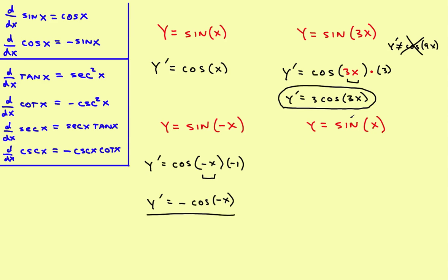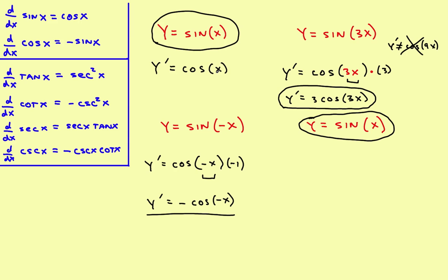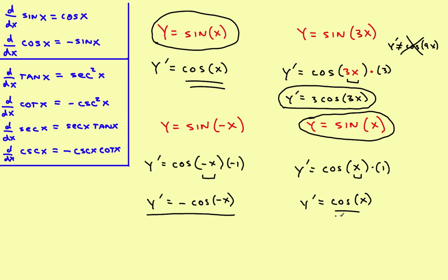Some students get confused about whether they need to use the chain rule or not. These two functions are exactly the same thing. Here we solved it without the chain rule. If you're never sure, go ahead and use the chain rule — it'll work. The derivative of the sine is the cosine; rewrite the original inner part times the derivative of what's on the inside. As long as it's a simple positive x, that derivative is just 1, which gives y prime equals cosine of x — the same answer either way. So if you're not sure, go ahead and use the chain rule.